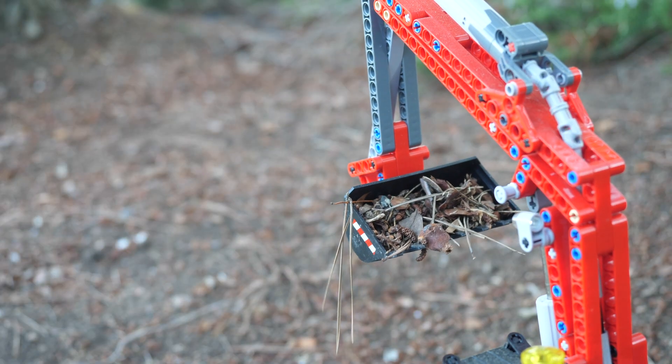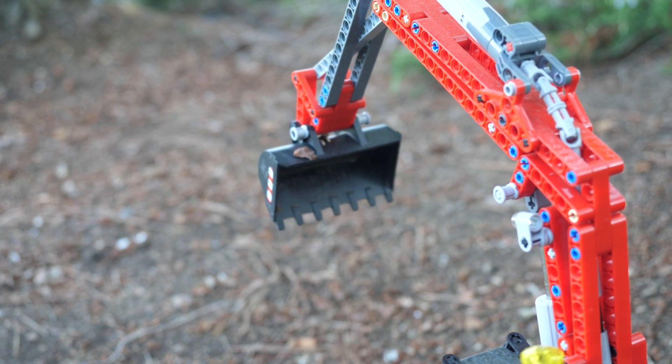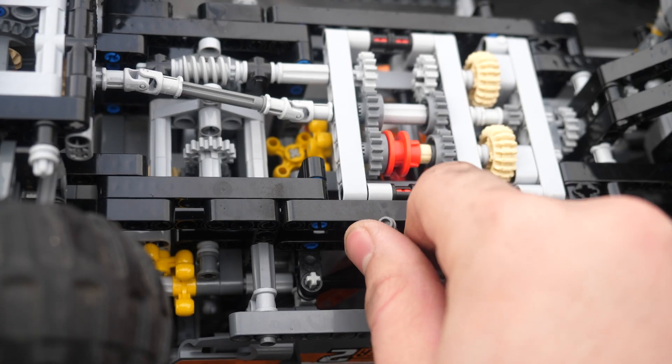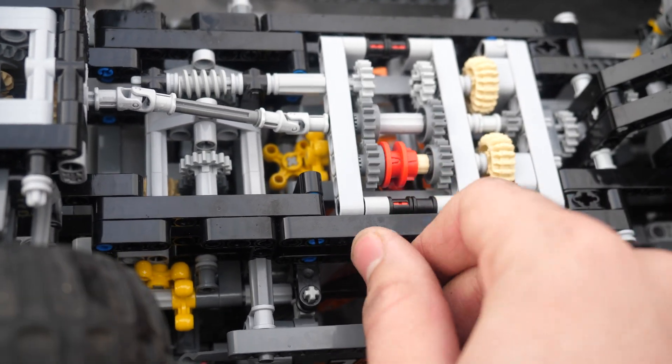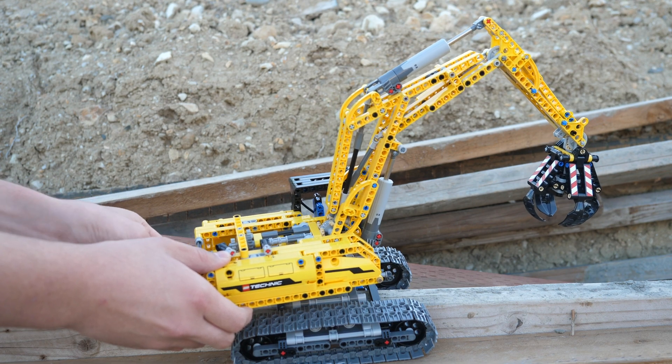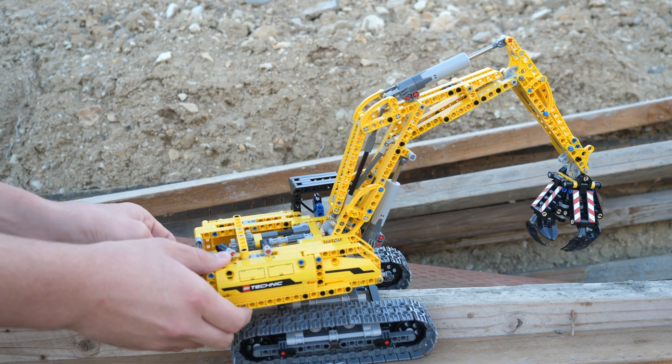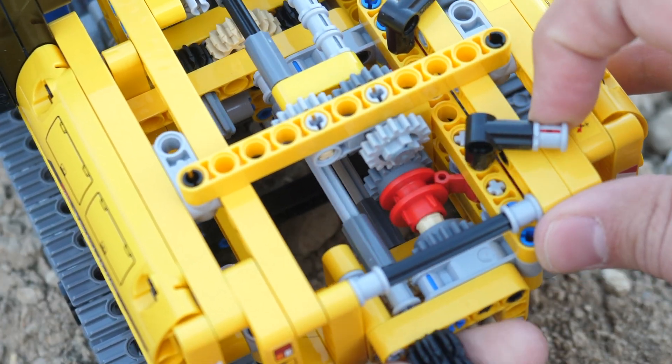There have been many different Technic sets with a distribution gearbox. It allows for pretty big sets to remain more on the affordable side, since they only use one motor. Furthermore, there have been several sets under $100 that used a distribution gearbox so that you could upgrade them with the accessory box, which only has one motor, and so a gearbox is required to control multiple functions.